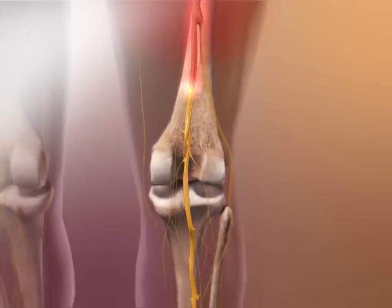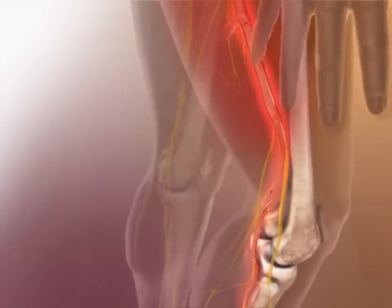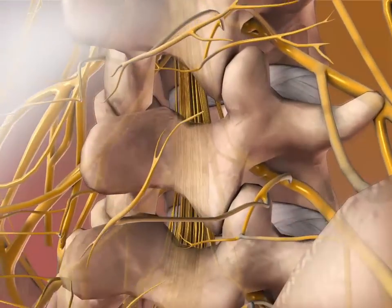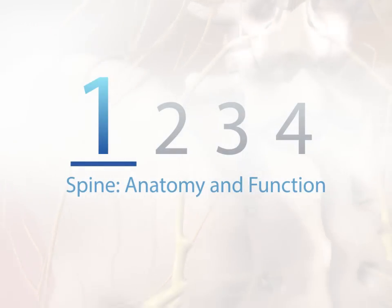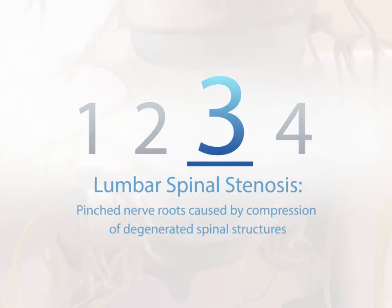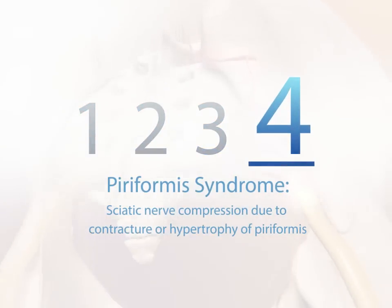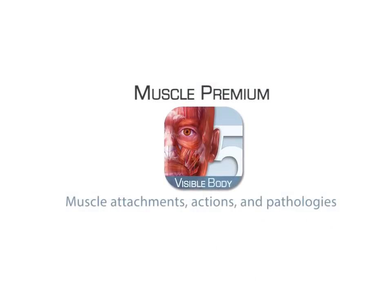While typical sciatica symptoms may be transient and often exacerbated by activity or sitting, buttock pain tends to be the predominant symptom in individuals with this condition. So that brings us to the end of our discussion today. We talked about important anatomy and function related to sciatica, disc injury, lumbar spinal stenosis, and piriformis syndrome. I used Visible Body's Muscle Premium to show you the anatomy and pathology related to sciatica. Thank you for watching.